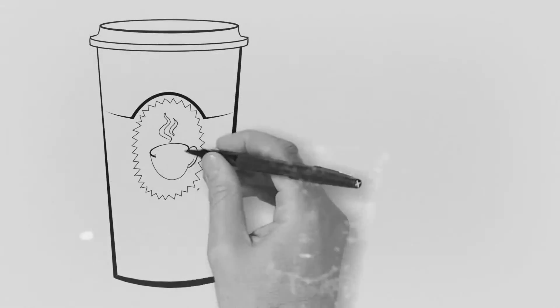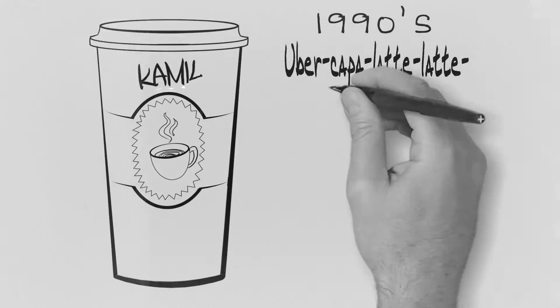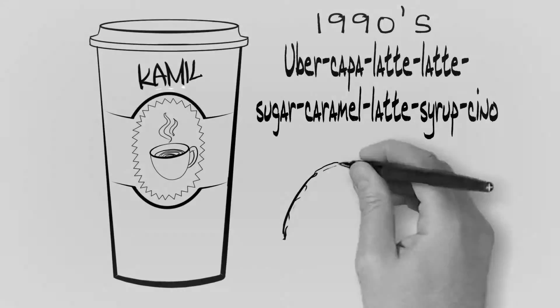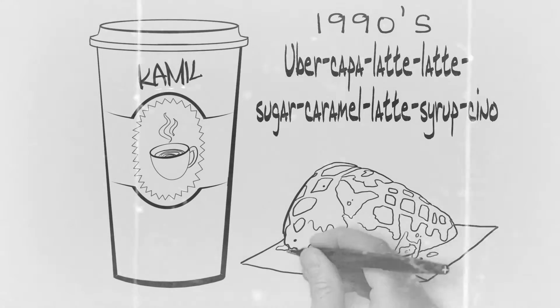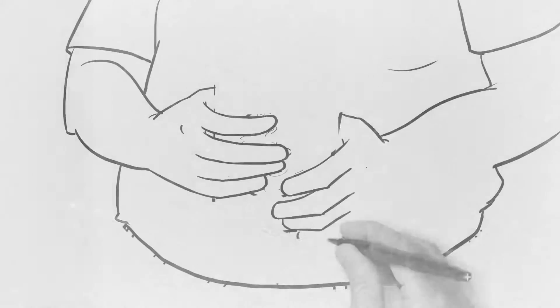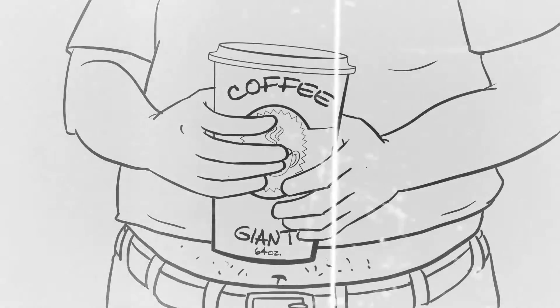During the 90s, trendy stores began to sprout up, offering highly sugarized and milkified flavors with seasonal scones. As cups grew in size, so did customers.